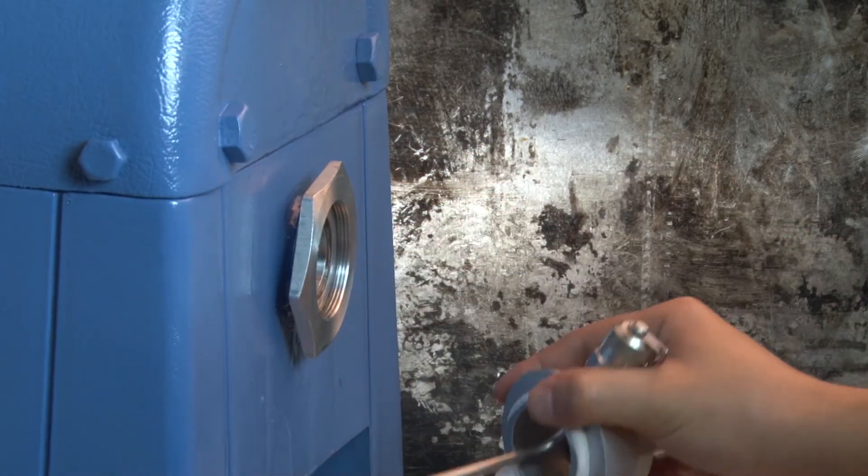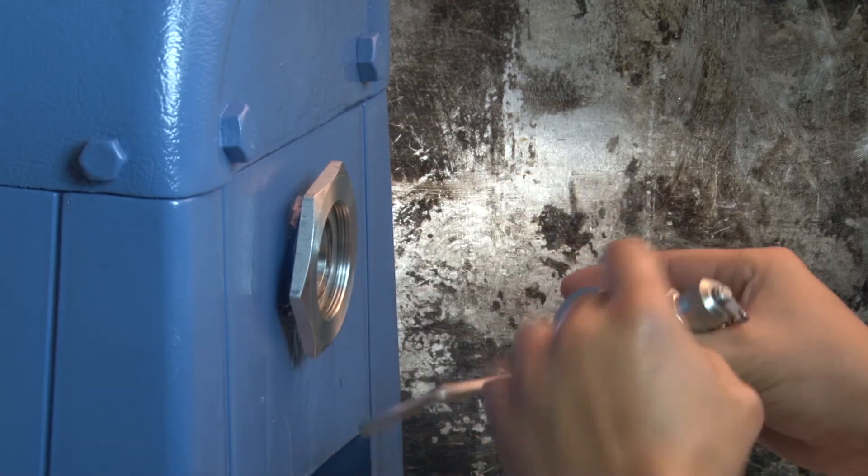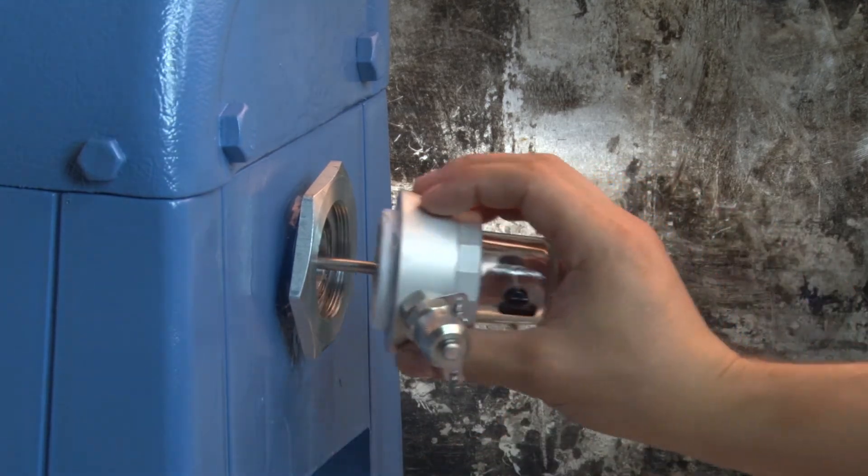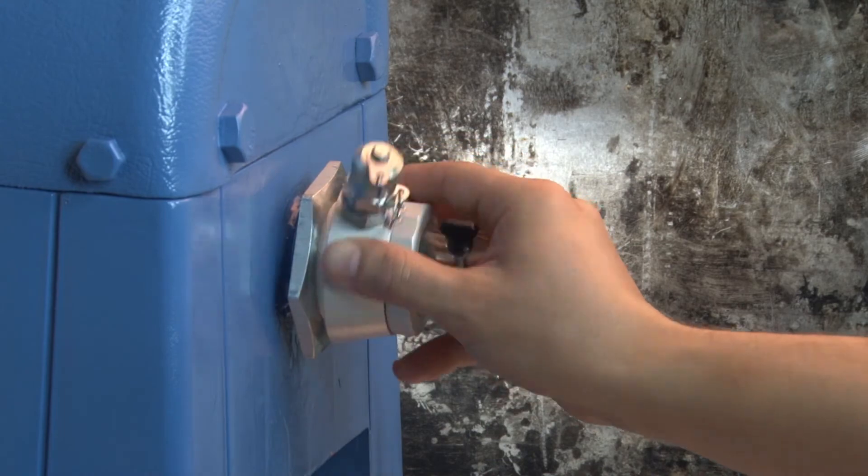Tightly thread the CMP into the reducer using shims and enough sealing tape to prevent leakage. Use the sampling port as leverage to achieve enough torque if necessary.